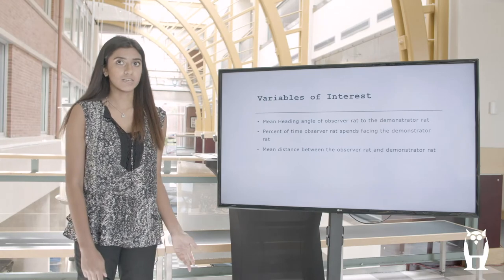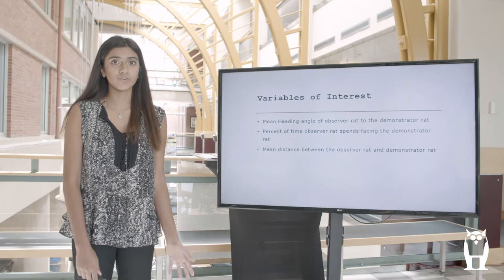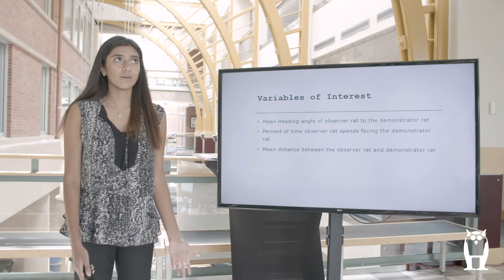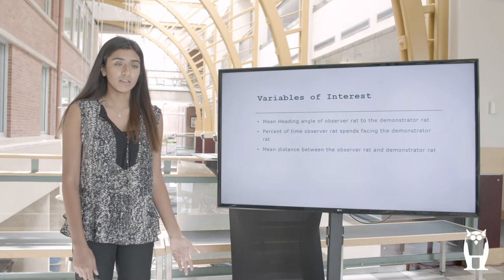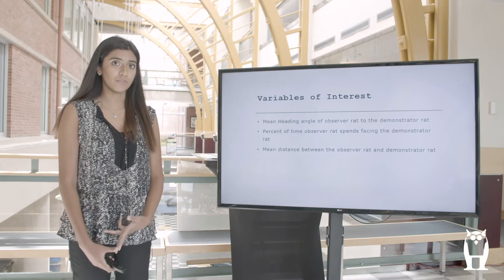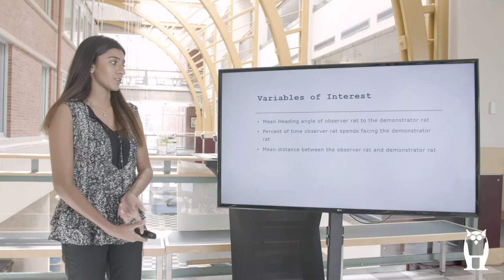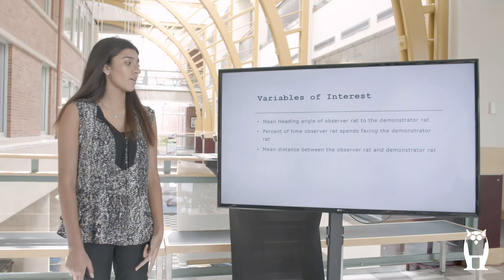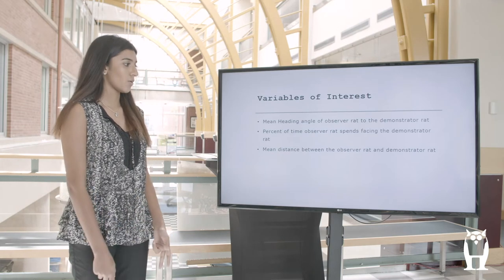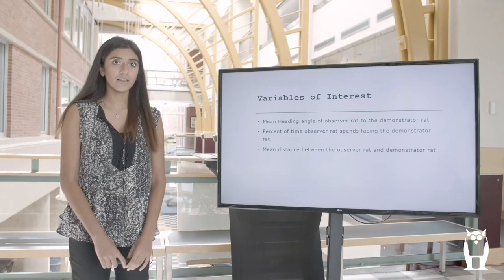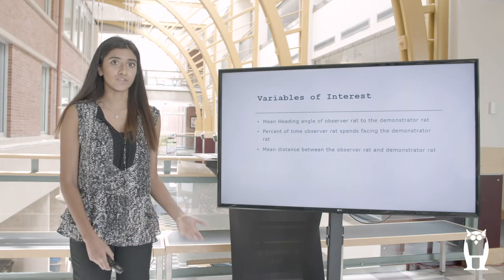What I specifically wanted to study was the underlying processes that contributed to efficient observational learning — basically, what specifically was the observer rat doing while trying to imitate and study the demonstrator rat. I studied three different variables: the mean heading angle of the observer rat and the demonstrator rat, the percentage of time the observer rat spent looking at the demonstrator rat, and the mean distance between the observer and demonstrator rat. I incorporated the software MATLAB, which can extract this kind of data by looking at videos of the trials.